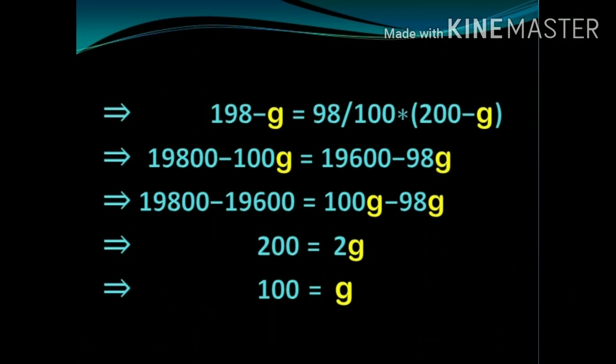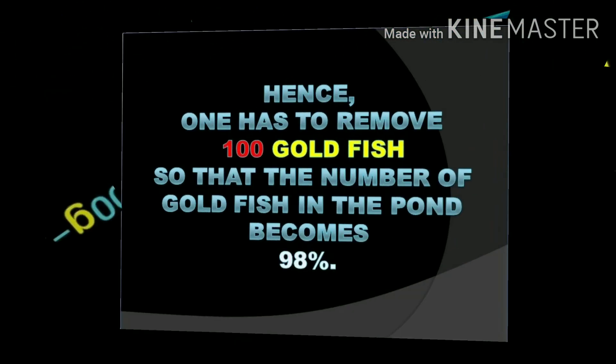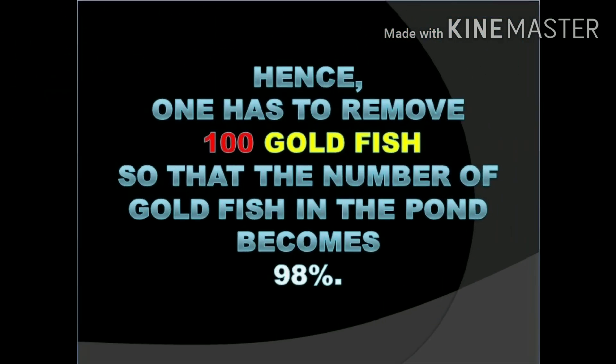The number of goldfish to be removed is 100. Hence the final conclusion is: one has to remove 100 goldfish so that the percentage of goldfish in the pond becomes 98%. Not just 2 or 4 or 6 — we need to remove 100 goldfish to make it 98%. The difference in percentage is just 1%, but the difference in number is 100. Quite surprising, but that is the beauty of mathematics.